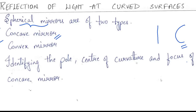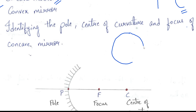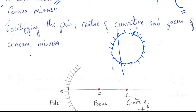Let us first understand what a concave mirror is. To understand this, let us take an example. Let us take a round or sphere-shaped mirror and polish the inner side so that its surface will be very smooth. After that, we will apply mercury onto the outer part of this mirror. Then we will separate a small part from this whole sphere mirror.